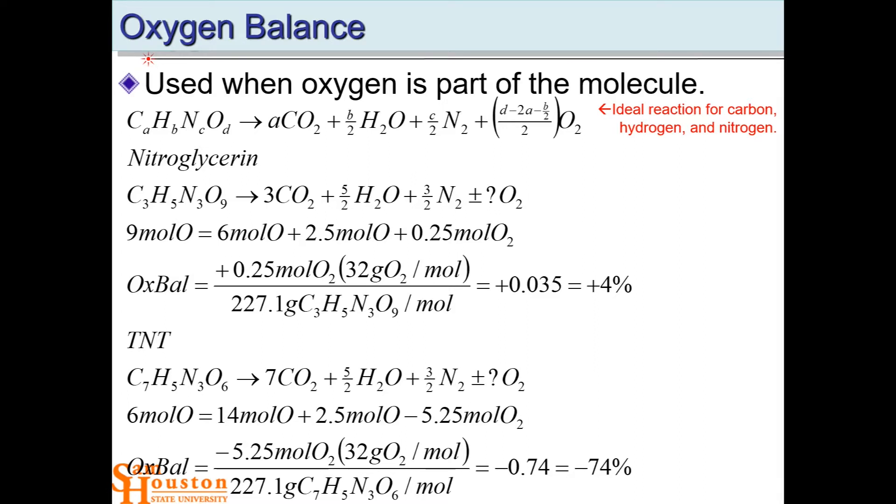Now TNT is also an explosive. It also detonates. But if you'll notice here, here's TNT. Seven carbons, five hydrogens, three nitrogens, and six oxygens. Up here nitroglycerin has nine because it's nitro groups and these are nitrate groups and these are nitro groups.